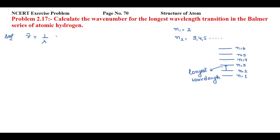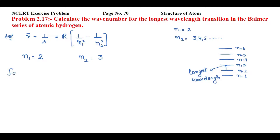We apply the formula: 1/λ = R × (1/n1² − 1/n2²). For the Balmer series, n1 equals 2 — that is where the electron starts its transition — and it ends at n2 equal to 3. For the longest wavelength in the Balmer series, n1 = 2 and n2 = 3.